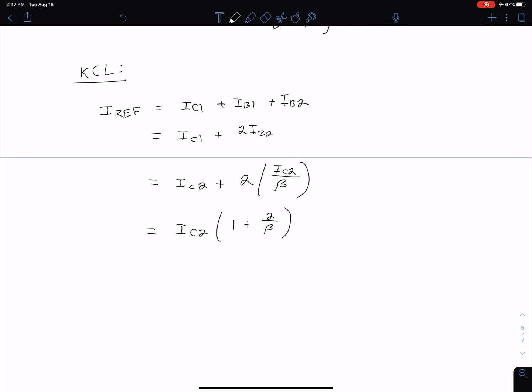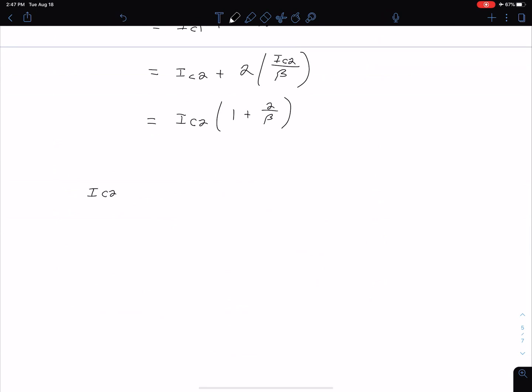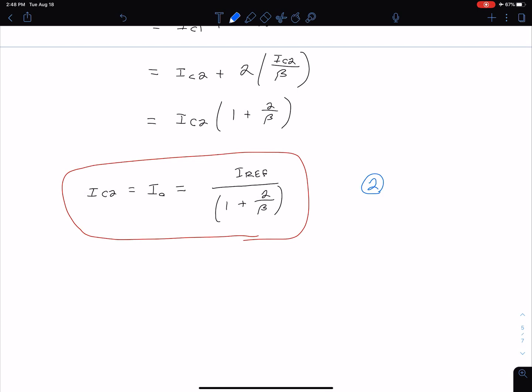Now that we have this, we can factor out IC2, and we can say this is IC2 times the quantity of 1 plus 2 divided by beta. Now we can solve for IC2, which equals our I out. We can say IC2 equals I out equals IRef in our numerator divided by 1 plus 2 over beta. This is our other important equation for our two-transistor current source. It's worth keeping in mind that this is for the ideal case when we have perfectly matched transistors and we're not considering the early effect. In some later videos, we're going to look at those things and how accounting for them changes this result slightly.